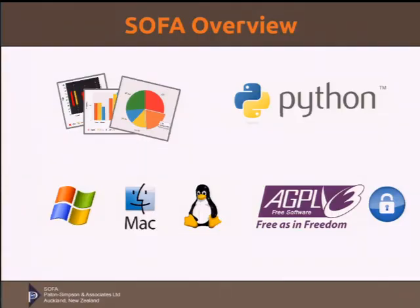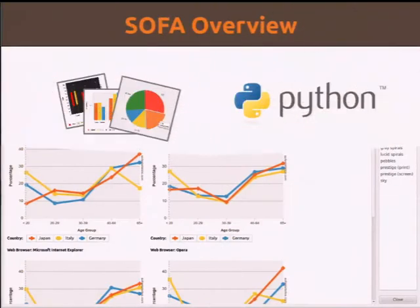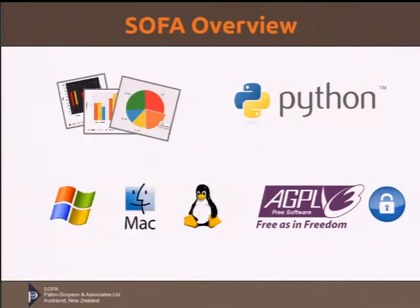I'm starting with SOFA Statistics as the example. It produces charts, tables, statistical analyses, and it's written in Python, as you'd expect. It runs cross-platform. The open source core is released under the AGPL3 — that's the bulk of it. And there are now two proprietary plug-ins, which I'm trying out.